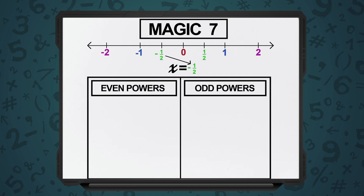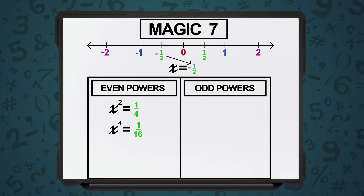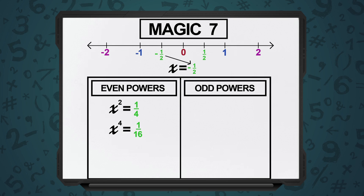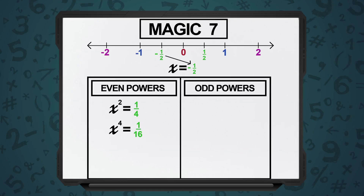Let's come to the even powers. If x is equal to minus half, x squared is 1 upon 4. The next even power will be x raised to 4, and that is 1 upon 16. Now, if we compare the position of 1 upon 4 and 1 upon 16 on the number line, which one comes to the right and which one comes to the left? Both are positive, so they are to the right of 0. So 1 upon 16 comes closer, whereas 1 upon 4 is further to the right — and the more a number is to the right of 0 on the number line, the greater it is. So to summarize, x squared is 1 upon 4, x raised to 4 is 1 upon 16, so x squared is greater than x raised to 4.